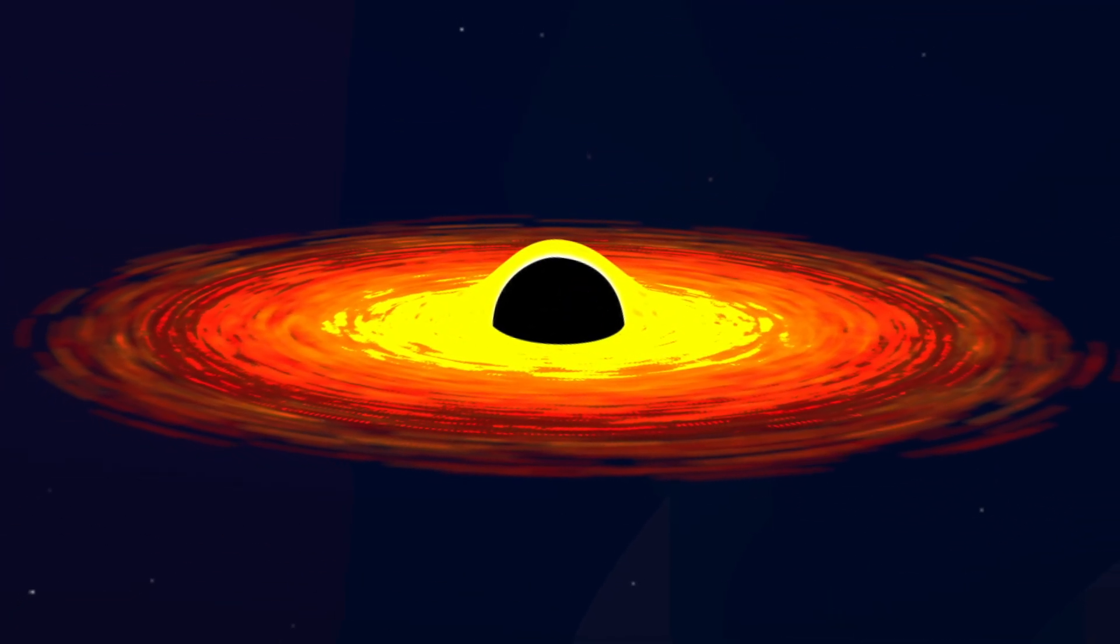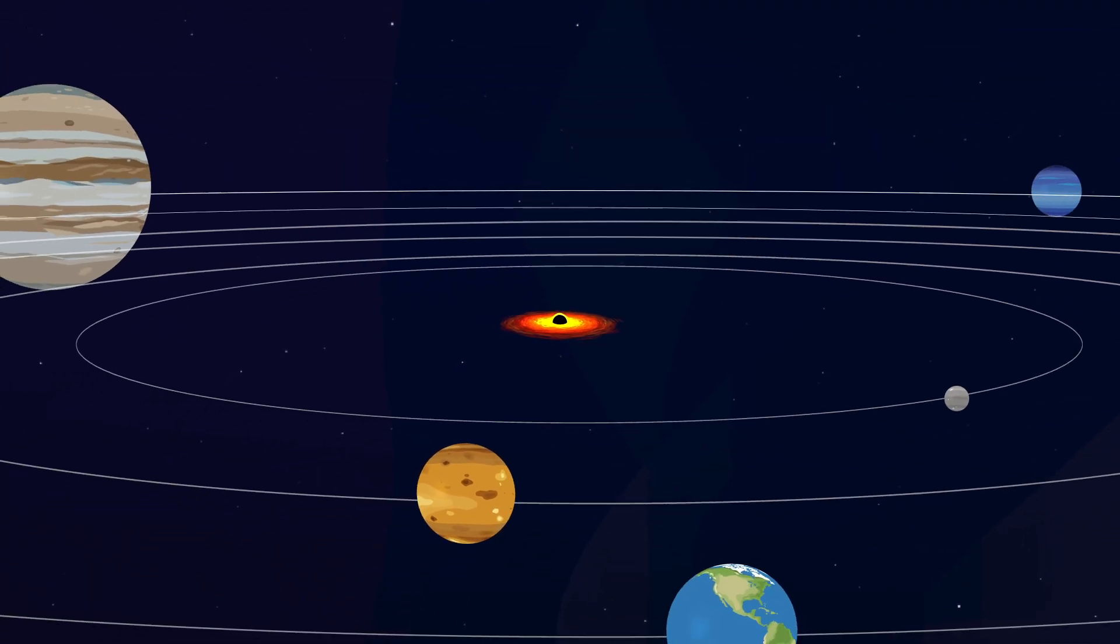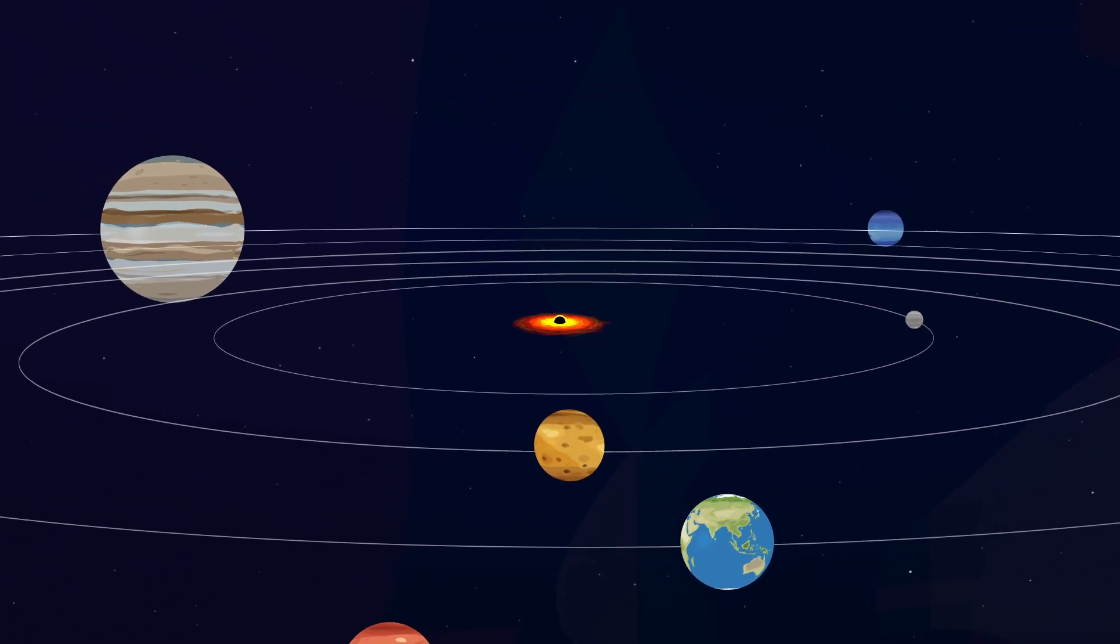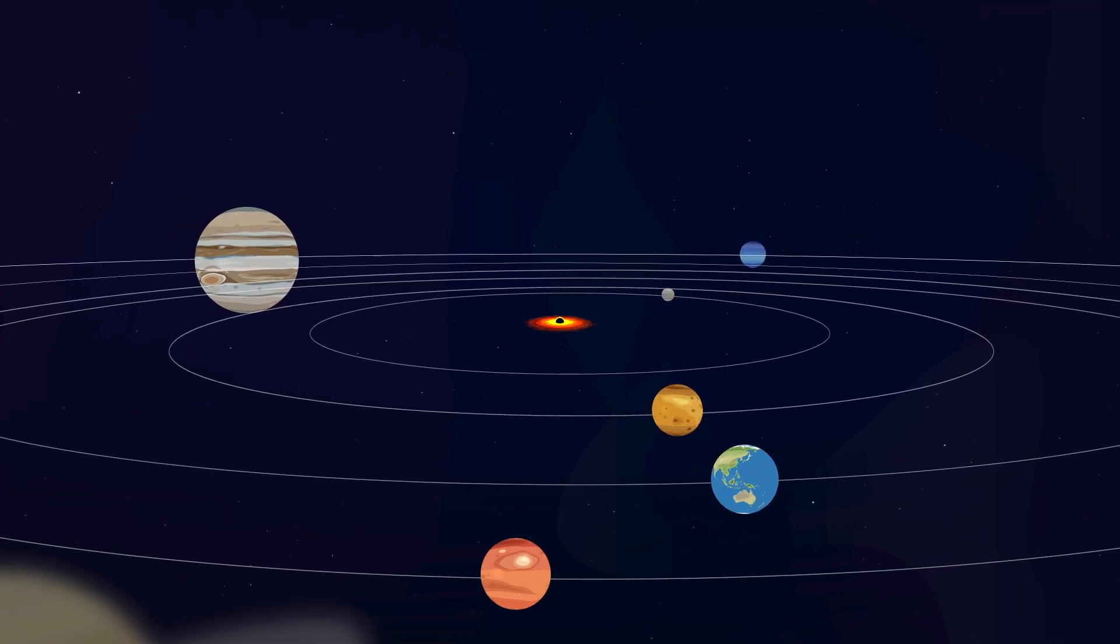A black hole of one solar mass may hardly change the structure of our system. Each planet would keep orbiting this black hole at the same distance as they orbit today, though the vanishing of our sun would have other consequences for the solar system at large.